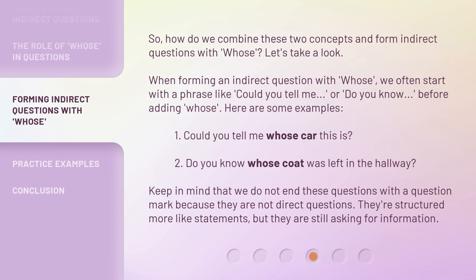So, how do we combine these two concepts and form indirect questions with 'whose'? When forming an indirect question with 'whose', we often start with a phrase like 'Could you tell me?' or 'Do you know?' before adding 'whose'. Here are some examples: One — 'Could you tell me whose car this is?' Two — 'Do you know whose coat was left in the hallway?' Keep in mind that we do not end these questions with a question mark because they are not direct questions. They're structured more like statements, but they are still asking for information.